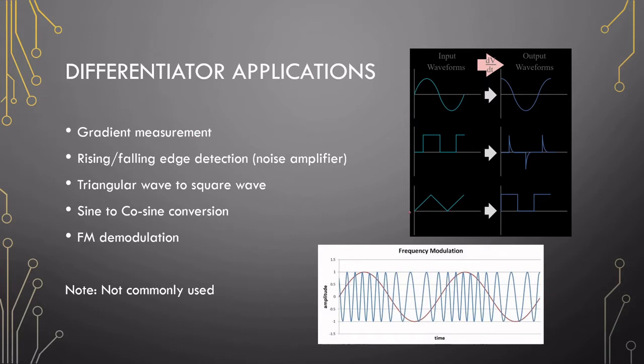If you have triangular waves, the gradient of this will be represented in the voltage of a block wave. You can also do rising and falling edge detection. So if you insert a block wave, you will get out a positive or a negative spike.